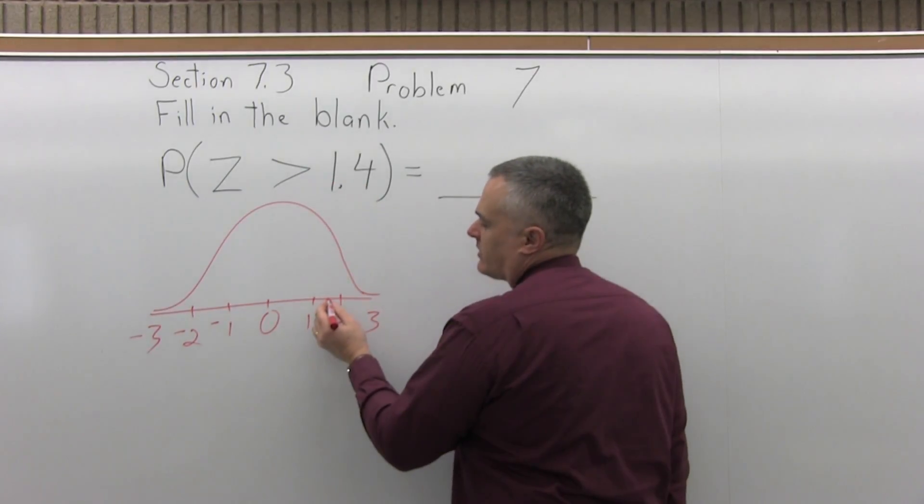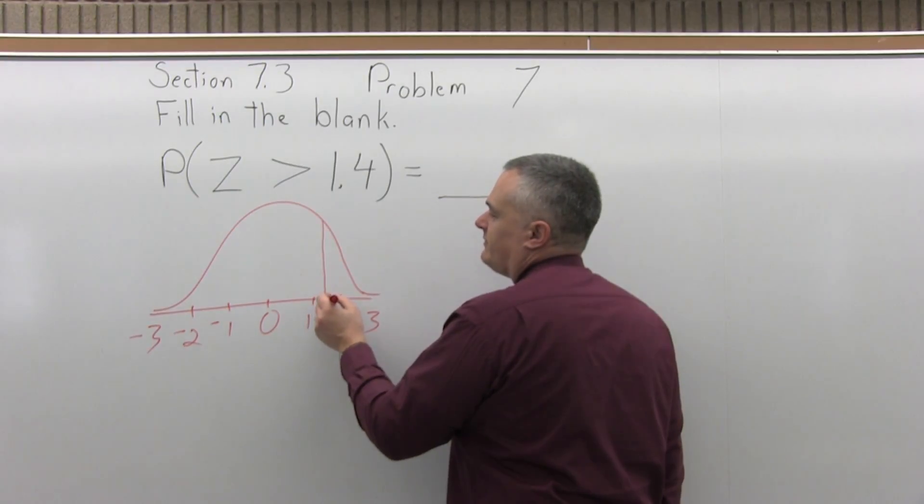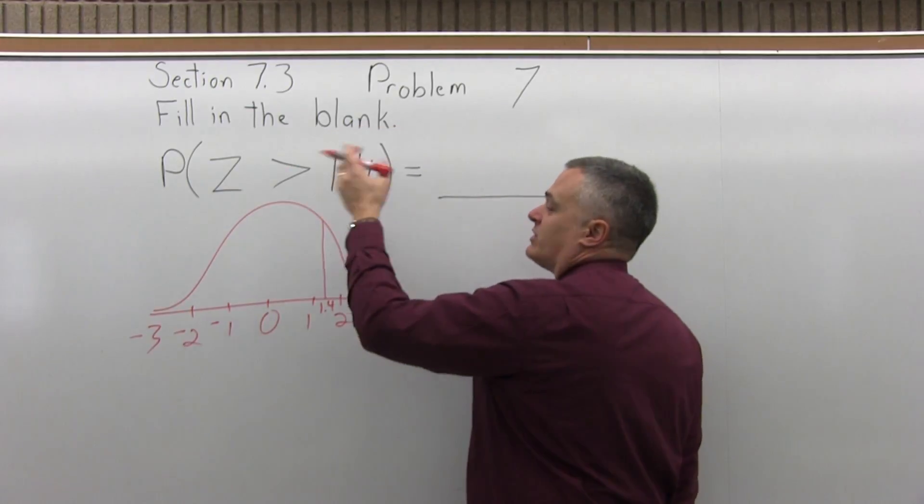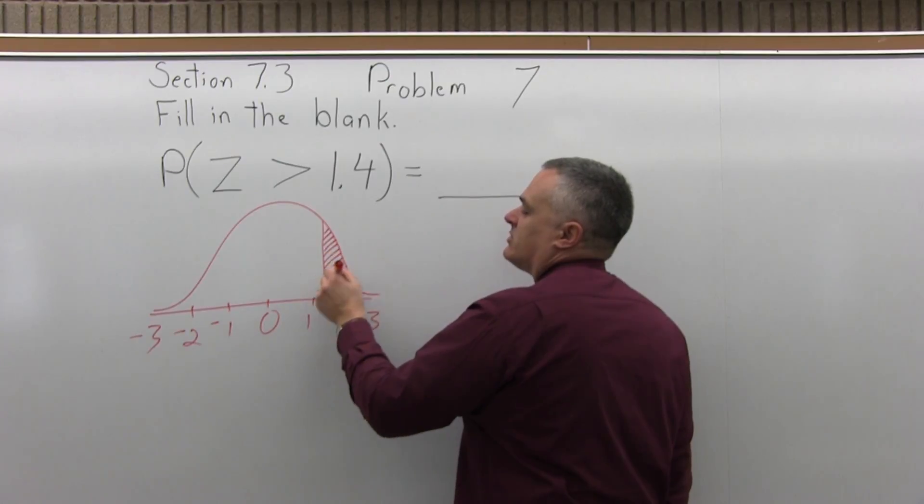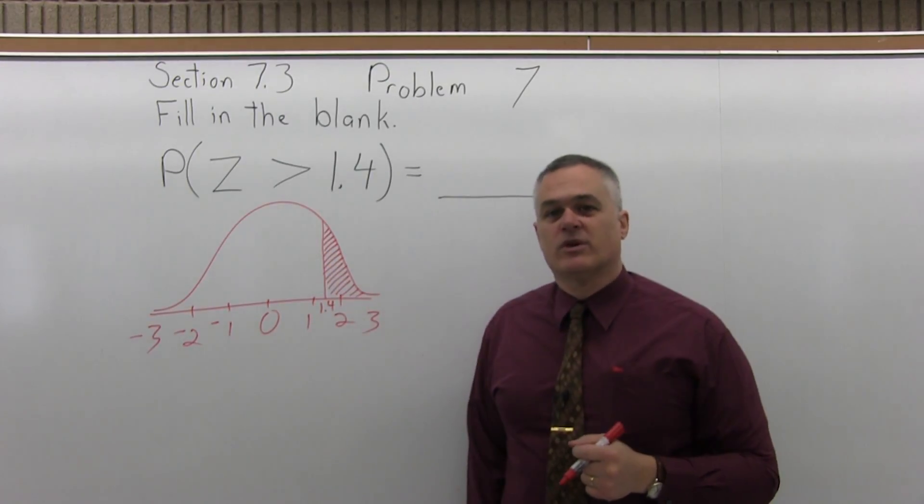So by 1.4, find where 1.5 would go and it's not quite up to 1.5. And the question asks us to find the area that's greater than or to the right of, that comes afterwards. So we're looking for that shaded area that comes after 1.4.